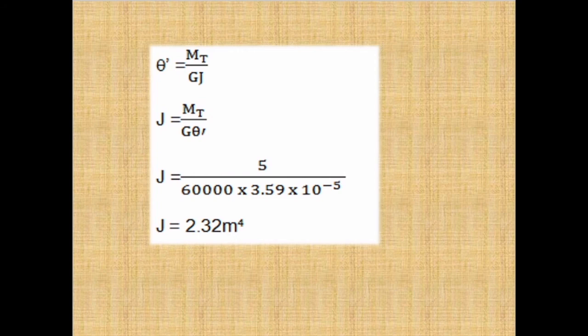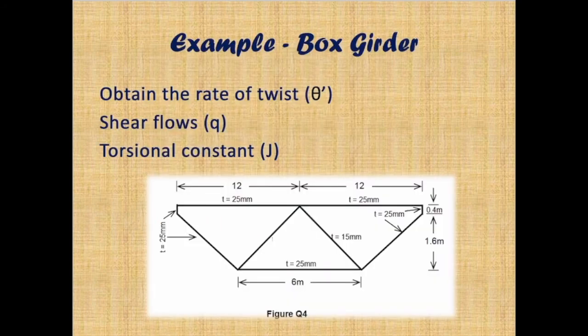So we have found the rate of twist theta dash, the shear flows Q1 and Q2, and also the torsional constant J. Thank you.